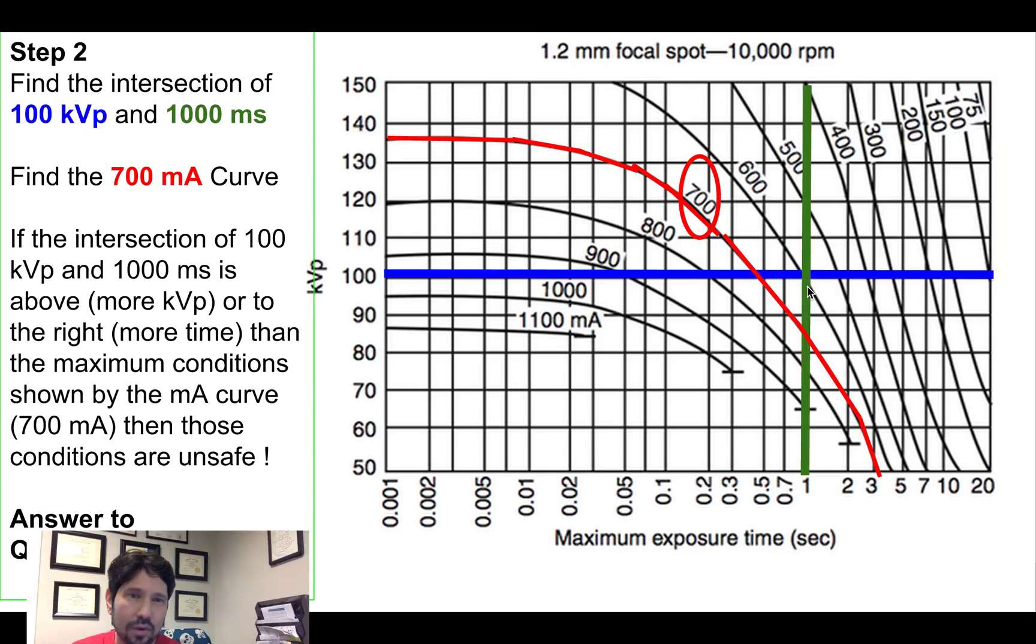So that's the point we're going to say is that above the curve or below the curve. So the curve would say at 100 kVp, I can only go about 0.45 seconds. Anything above that is going to be unsafe. And so here we see we're asking for a second. The curve says, no, I can't go past this cutoff at that kVp. So if we're to the right of the curve, or if we're above the curve, we're unsafe. Alright, so these conditions to this question would be unsafe.